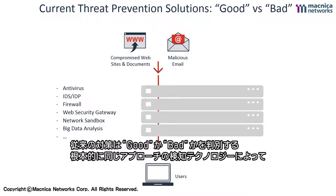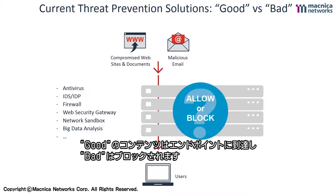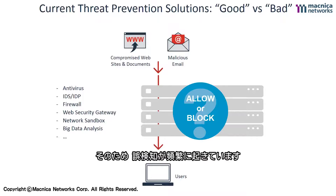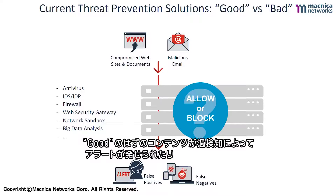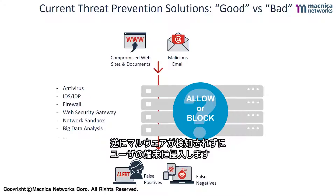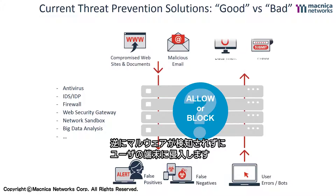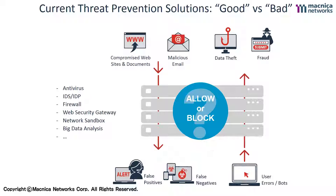All of these technologies come down to the same thing, which is to decide if the content is good or bad, and then allow it to reach the endpoint if it's good and block it if it's bad. So too frequently the decision is wrong. We get false positives and wind up chasing alerts for content that was good, or we get false negatives and wind up with malware on users' devices, which is really when the trouble starts.